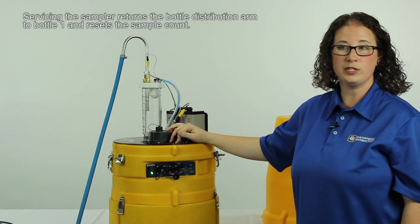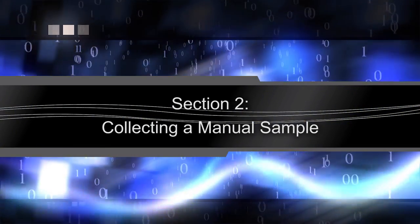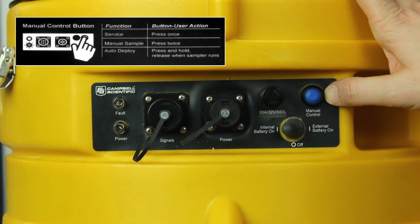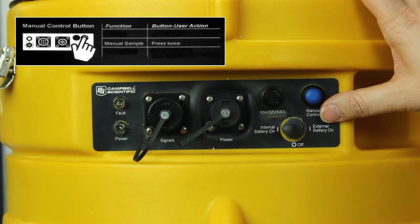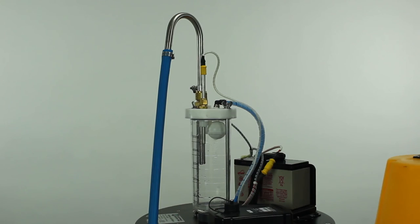To collect a manual sample, you push and release the manual control button twice. So we're going to do that right now. One, two. This time the sampler will run a much shorter time because we've already set all of the purge times and vacuum times.